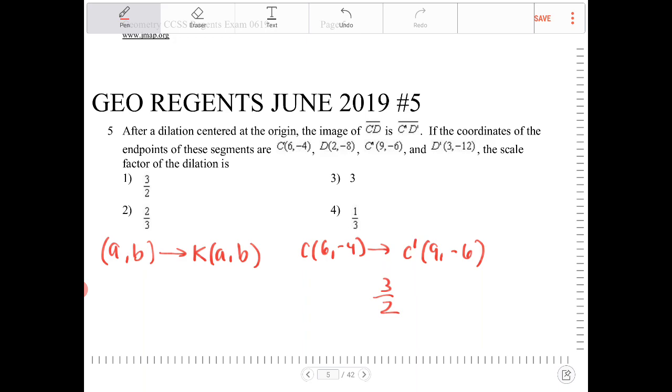So one more time to figure out why k is equal to 3 halves, you just take the new x coordinate divided by the old x coordinate. This should all be the same between the new y coordinate and the old y coordinate.